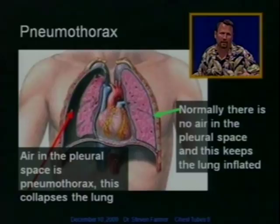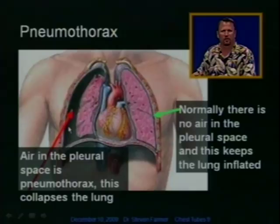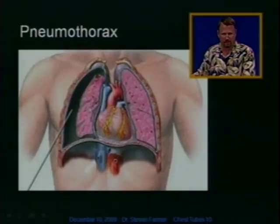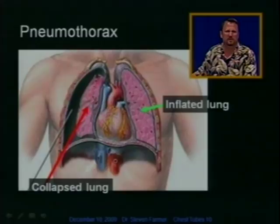Pneumo means air, thorax means the chest. So air in the pleural space is pneumothorax, and this collapses the lung. Notice the inflated lung versus the collapsed lung — we'll look at some X-rays of this in a moment.